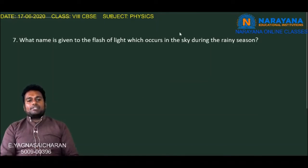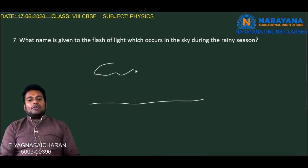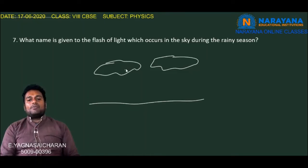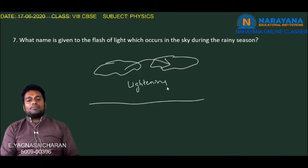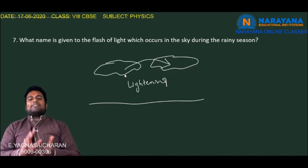Let us see the seventh question: What name is given to the flash of light which occurs in the sky during the rainy season? During the rainy season, a flash of light that transfers from one cloud to another cloud is named as lightning. Lightning occurs as a natural electric discharge transferring from one cloud to another cloud.